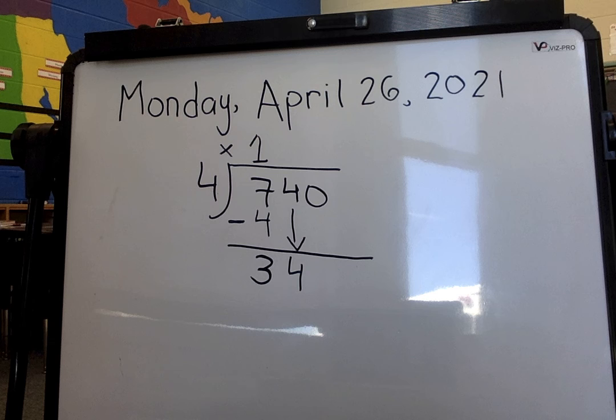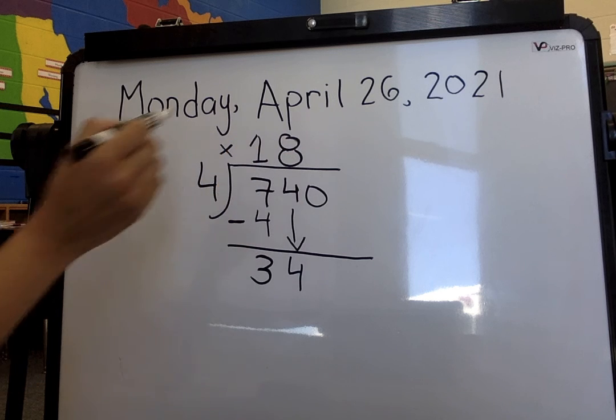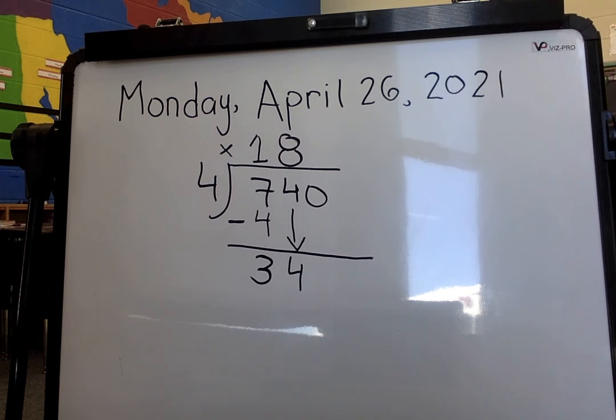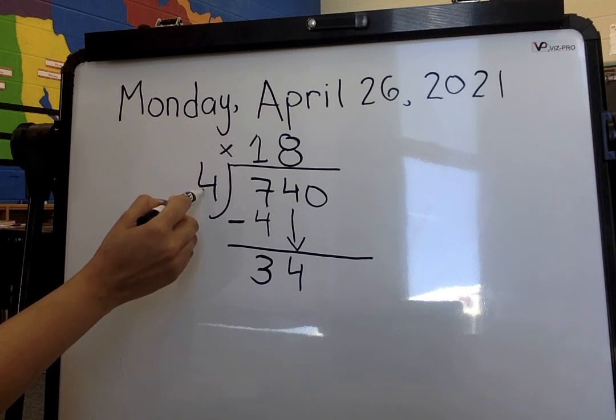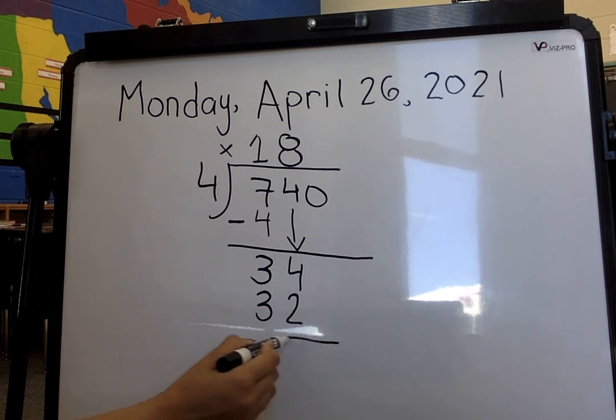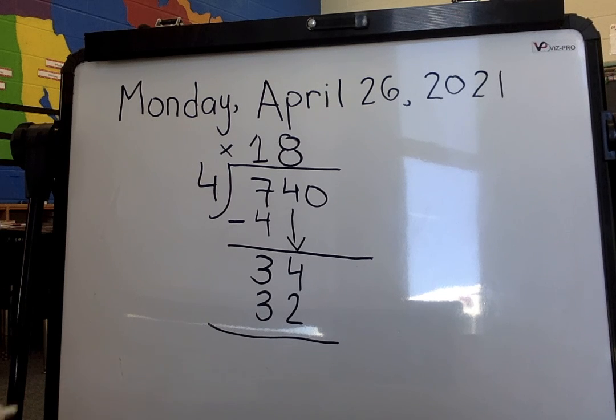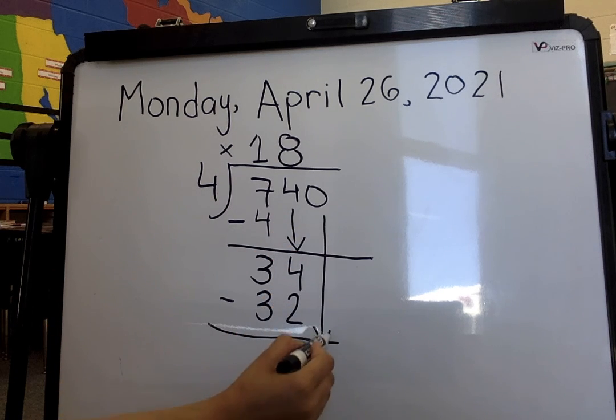So we need to ask ourselves, how many 4s can fit into 34? Well, 8 4s can fit into 34, but only we will get not 34. But if we multiply 4 times 8, it will give us 32. Then we go ahead and subtract again, 4 take away 2, we are left with 2.